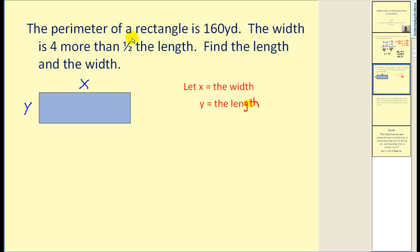So the first sentence states the perimeter is 160 yards. Remember the perimeter is a distance around the outside. So the perimeter of this would be 2x plus 2y must equal 160. The second sentence states the width is 4 more than half the length.